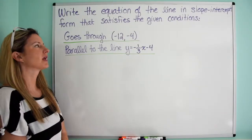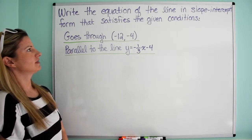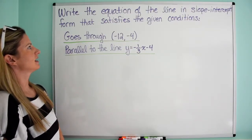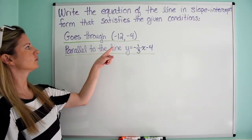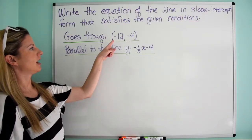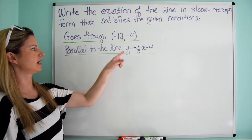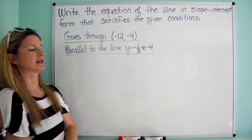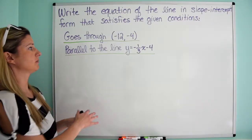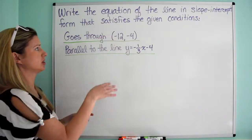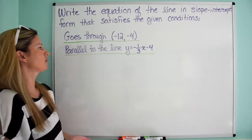Let's try this problem. We want the equation of the line in slope-intercept form that satisfies the given conditions. It goes through point negative 12, negative 4 and it's parallel to the line y equals negative one-third x minus 4. Basically we have some information and we need to write the equation of a line in slope-intercept form.